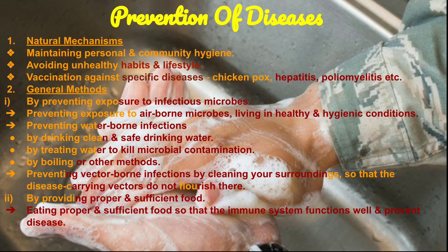General methods include preventing exposure to infectious and airborne microbes by living in healthy and hygienic conditions. Waterborne diseases can be prevented by using clean and safe drinking water and by boiling drinking water to kill microbes. Vector-borne diseases like malaria and dengue can be prevented by cleaning our surroundings so that disease-carrying vectors do not breed there. Providing proper and sufficient food also helps build a better immune system to prevent diseases.